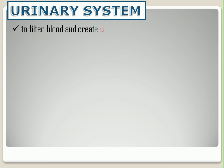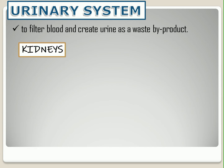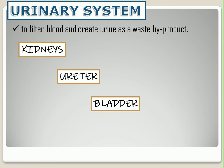The function of the urinary system is to filter blood and create urine as a waste by-product. The main organs in this system are the kidneys, ureter, bladder, and urethra.